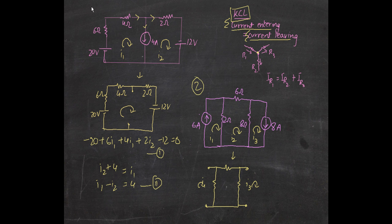In example two, you see the current sources are on the outside and the resistors are in the middle. There will be three loops: I₁, I₂, and I₃. We write the loop currents as usual. For the six-ohm resistor we wrote six I₁, for the four-ohm we wrote four I₁ because those were in the loop of I₁, and for the two-ohm we wrote two I₂ because that was in the loop of I₂.